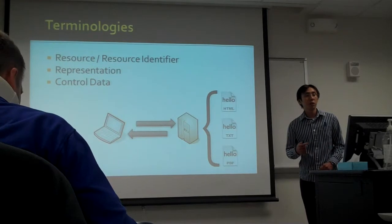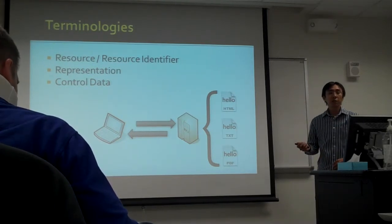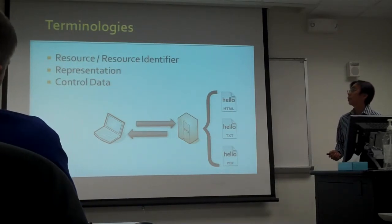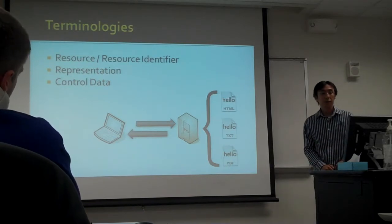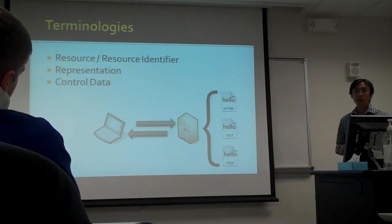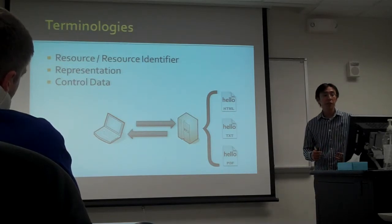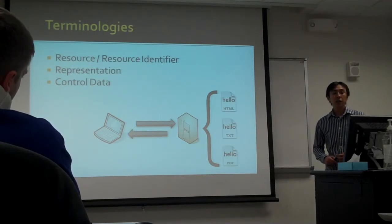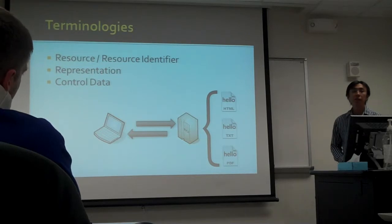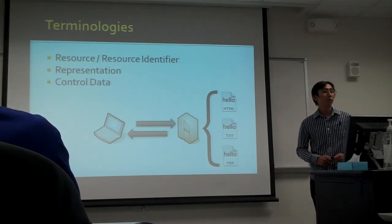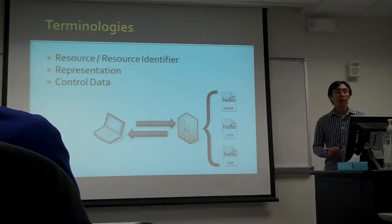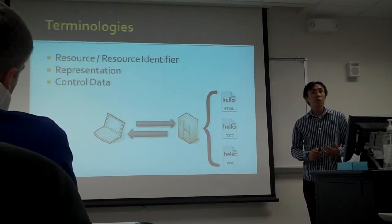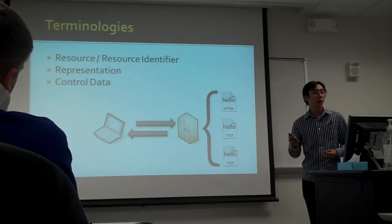Before going deeper into REST, I will introduce some terms first: resource, resource identifier, representation, and control data. A resource is any information that can be named — for example, a search result. The resource identifier is a URI, which stands for Uniform Resource Identifier, and it consists of a URN and URL. URN is Uniform Resource Name and URL is Uniform Resource Locator.